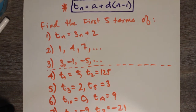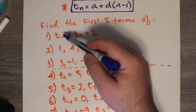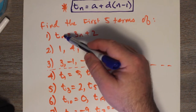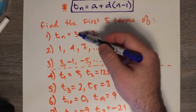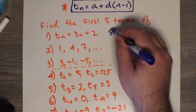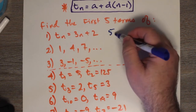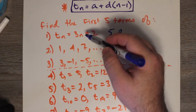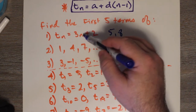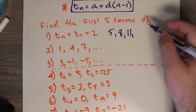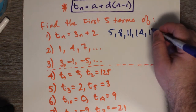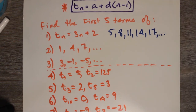Let's find the first 5 terms of the following sequences. For Tn equals 3n plus 2: T1 is 3 times 1 plus 2, which is 5. T2 is 3 times 2 plus 2, which is 8. It looks like we're increasing by 3 each time. The third term: 3 times 3 plus 2 is 11. Then 14 and 17. Those are our first 5 terms.